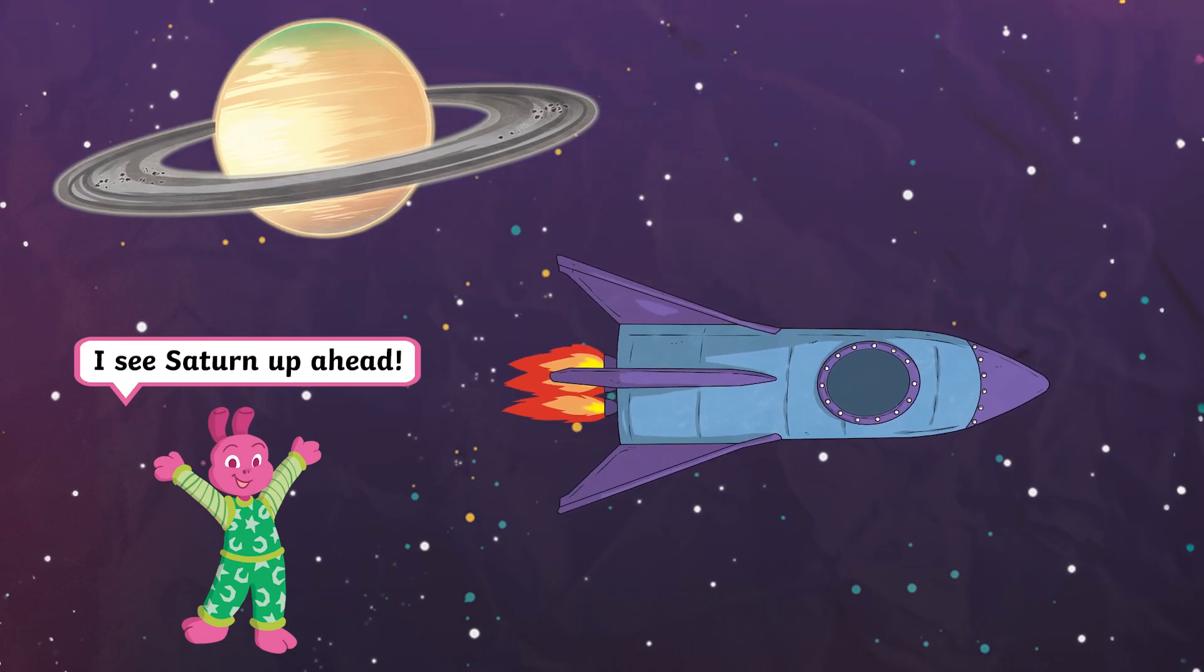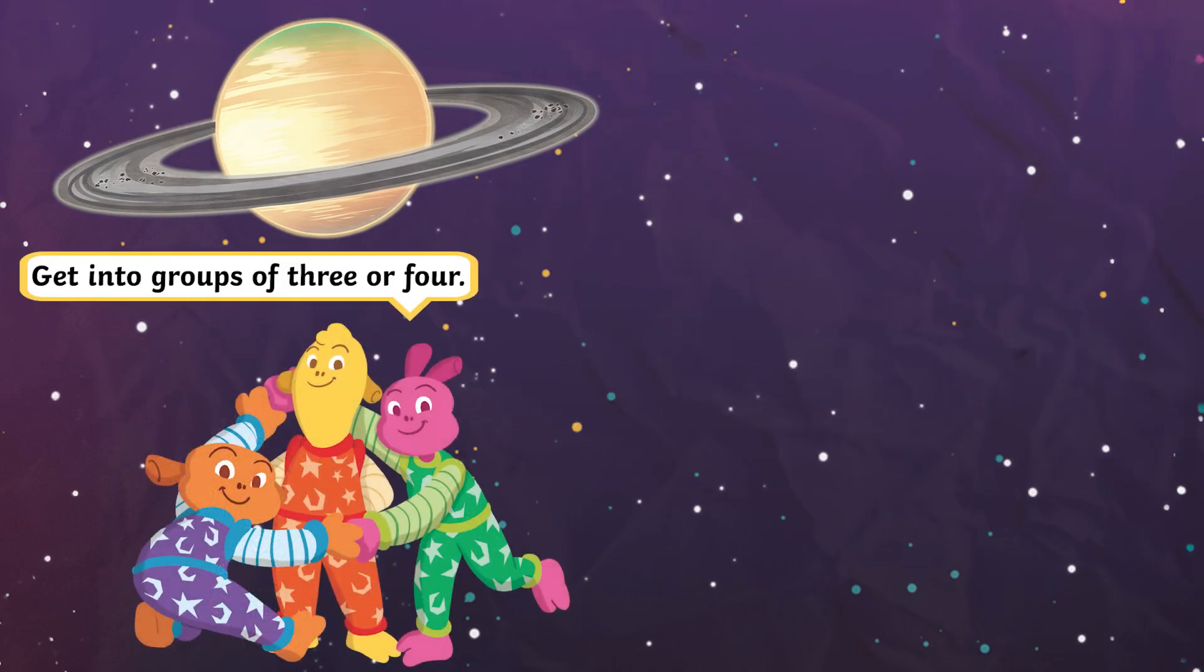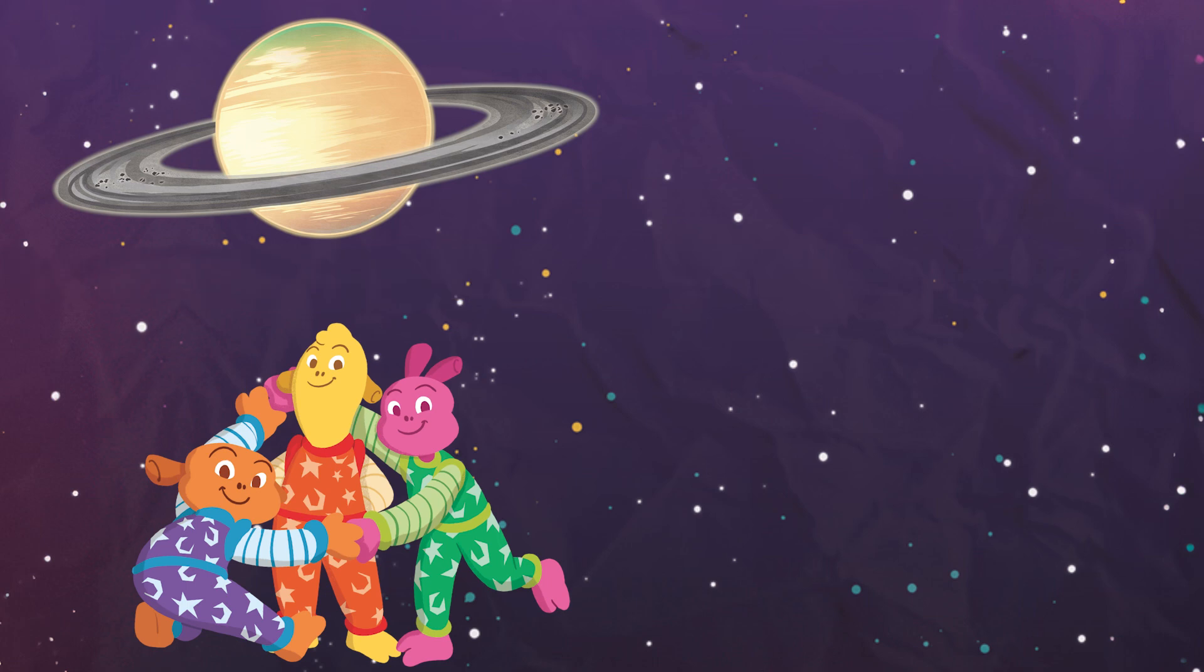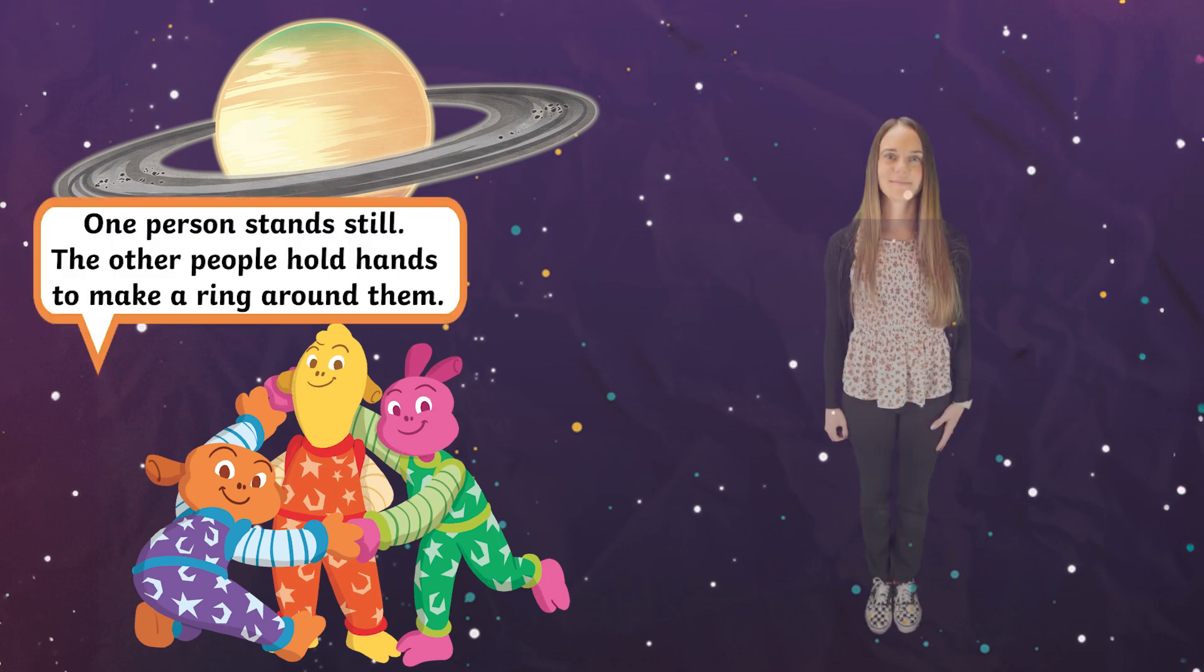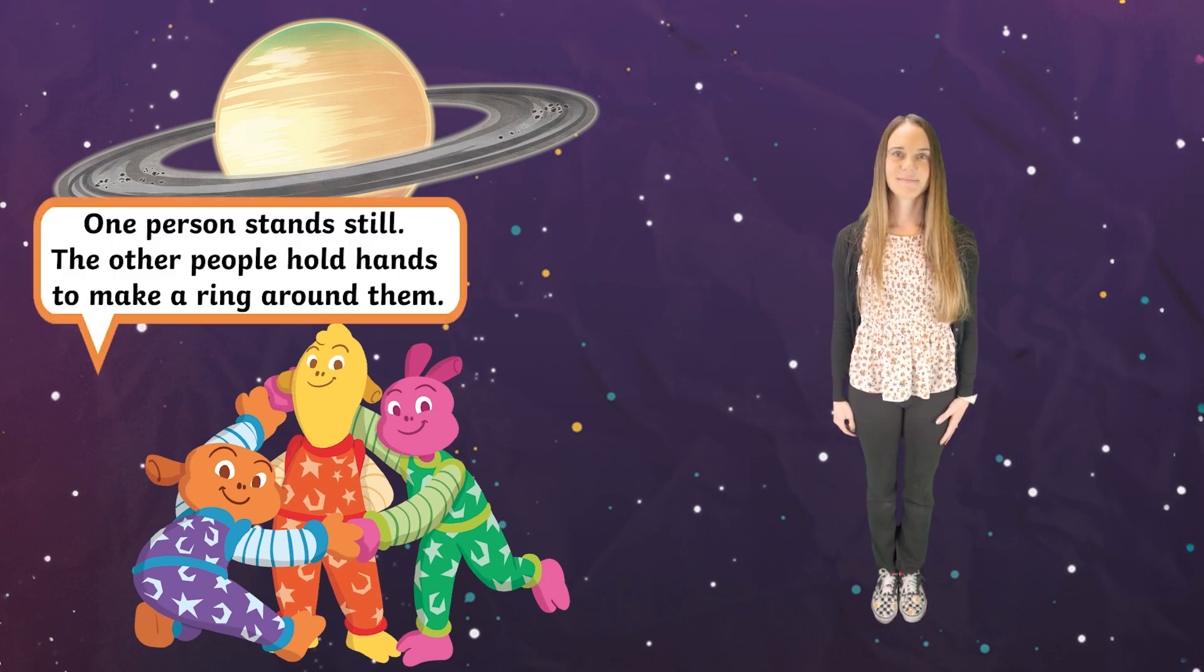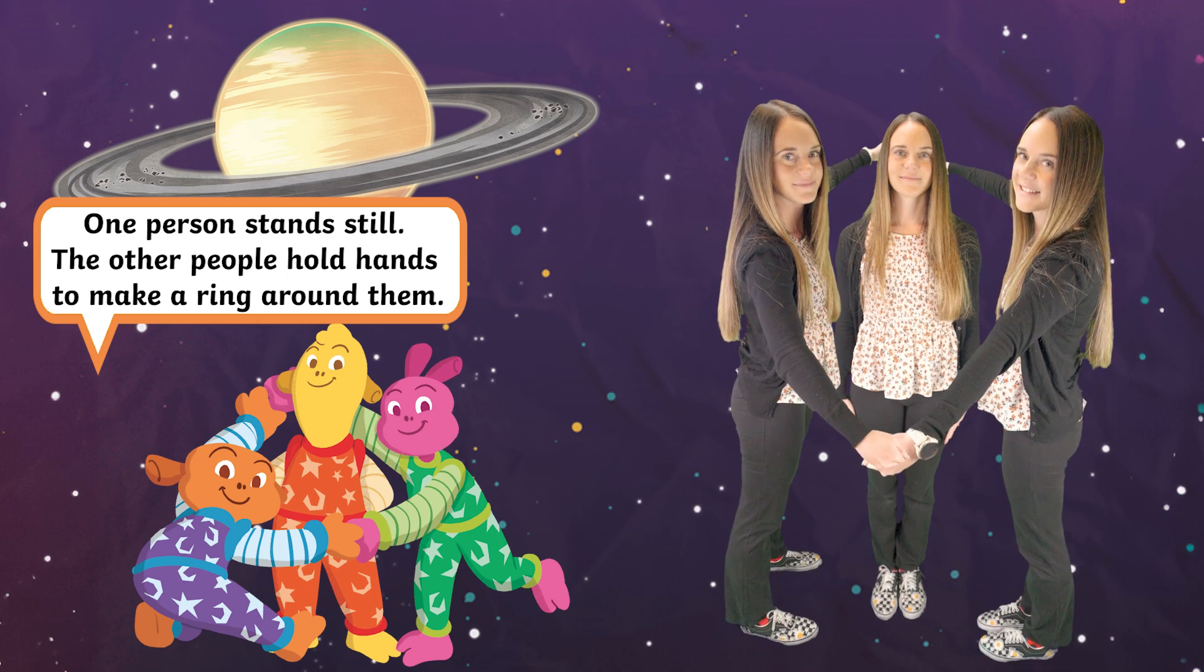I see Saturn up ahead. Get into groups of three or four. One person stands still, the other people hold hands to make a ring around them. Now you look just like Saturn.